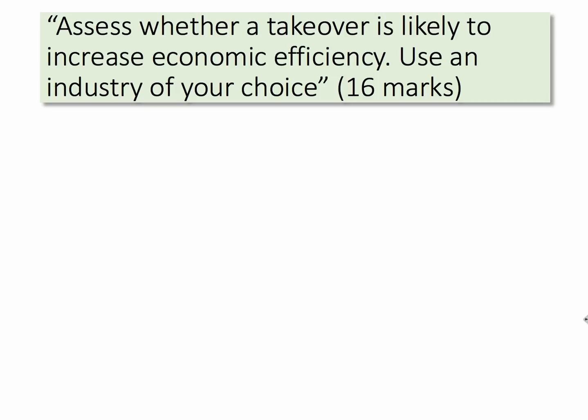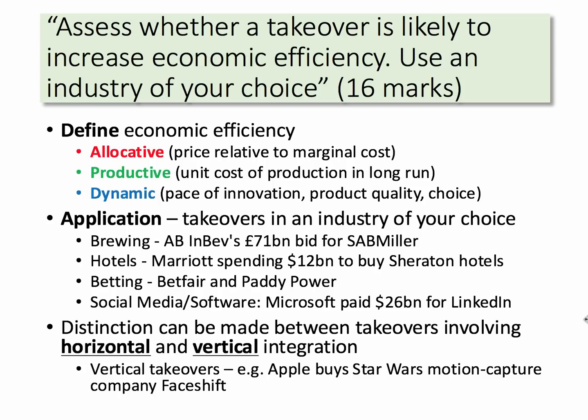It's always good in the exam to start off with clear, accurate definitions. Define economic efficiency — it's in the question. Efficiency means making optimum use of scarce resources. Allocative efficiency is price relative to marginal cost. Productive efficiency is to do with the unit cost of supply, particularly in the long run. Dynamic efficiency is the pace of innovation, quality of products, and the range of choice for consumers.